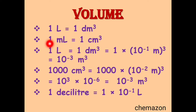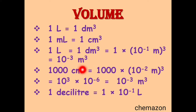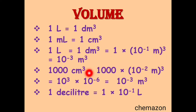Let us prove that 1 litre is 1000 ml. 1000 ml is nothing but 1000 cm cube, and 1 centimetre is 10 raised to minus 2 meter. So accordingly, 10 raised to minus 2 meter cubed gives 10 raised to minus 6. Then 10 raised to minus 6 into 10 raised to 3 is 10 raised to minus 3 meter cube, which is the same result we got for 1 litre.